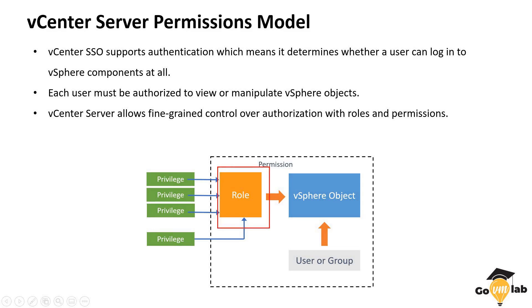We also have something called a role. Like any traditional role-based access control implementation, VMware has provided a set of default roles such as virtual machine administrator, network administrator, datastore administrator, and a couple of sample roles. These roles are made up of privileges. For example, if you are creating a role as a virtual machine administrator, you would not want that administrator to modify network configurations, so you give them privileges specific to virtual machines such as powering on, powering off, and creating snapshots.